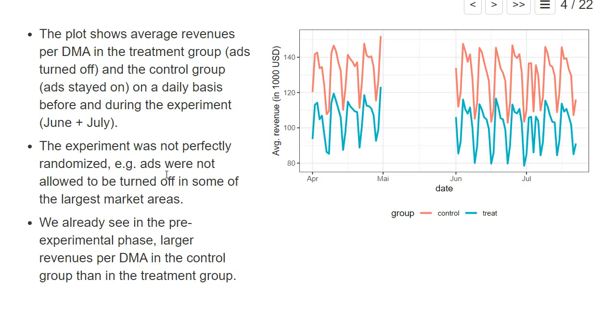Indeed, if you read the article you will learn that the experiment was not perfectly randomized. For example, there were some large market areas where for business reasons it was not allowed to turn off the advertisement, and there were also other statistical reasons why they were not perfectly randomized, which I don't want to discuss in detail here but which are described in the paper.